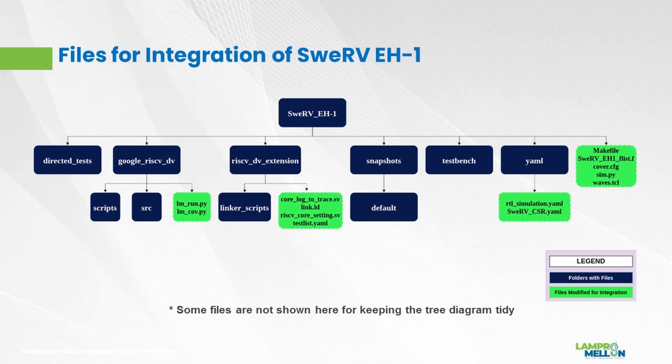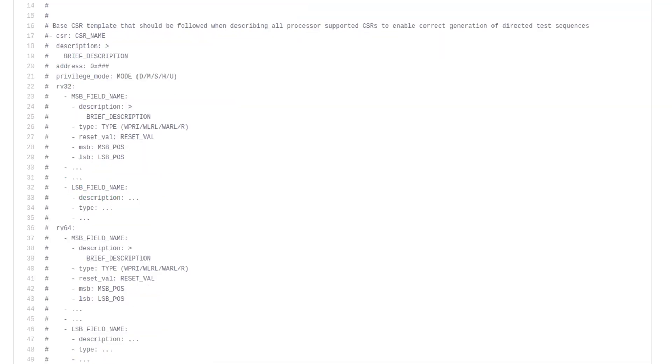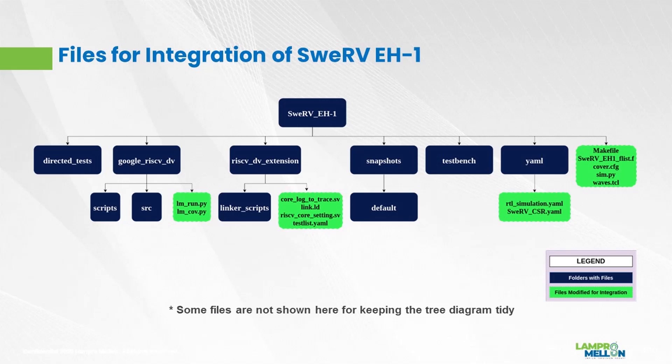SweRV is a configurable core which comes with some predefined configurations. For now, we are using the default configuration from SweRV EH1. The define file for RTL, testbench and directed tests are placed in the snapshots directory. SweRV EH1 does not come with a tracer, so we have implemented the tracer, which is required for functional verification in post-sim comparison. rtl_simulation.yaml and swerve_csr.yaml list base commands for RTL compilation and simulation, and all the CSRs implemented in SweRV respectively. sim.py is a Python script similar to lm_run.py and is responsible for generation and execution of RTL compilation and simulation commands and post-simulation comparison. cover_config is used for defining the top level tree for code coverage, and the wave script is used for dumping FST/VPD waves.